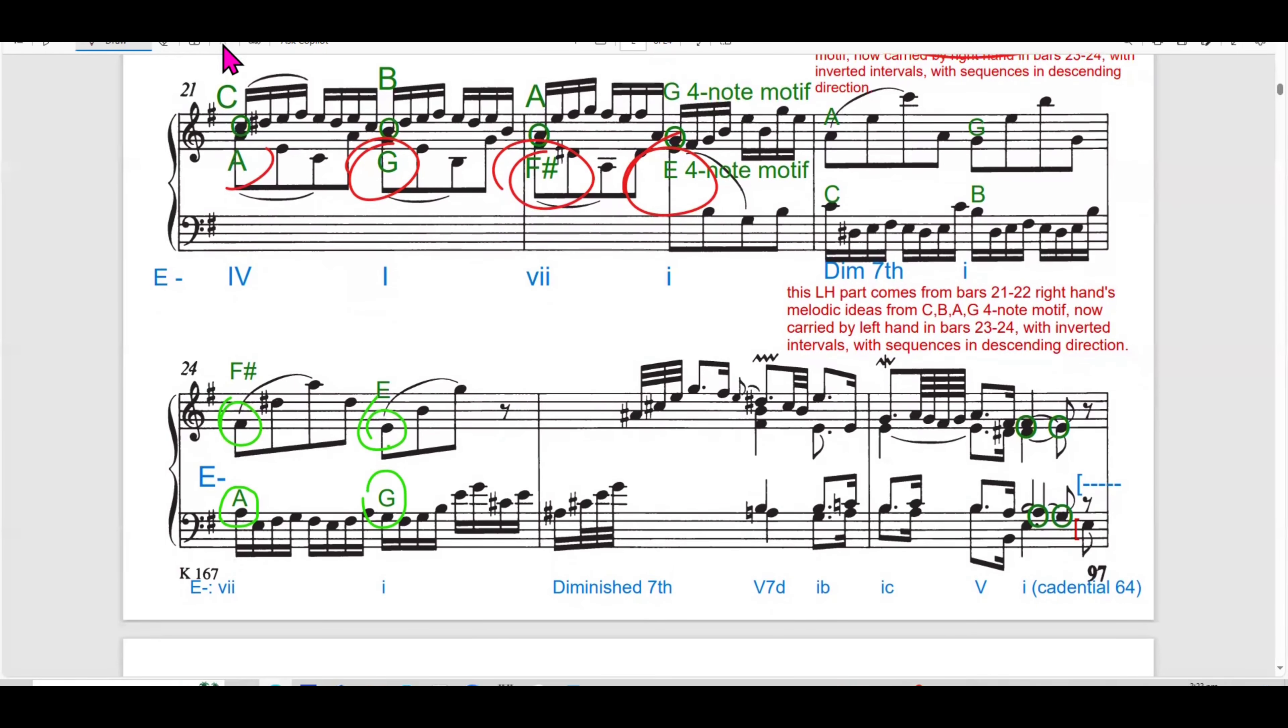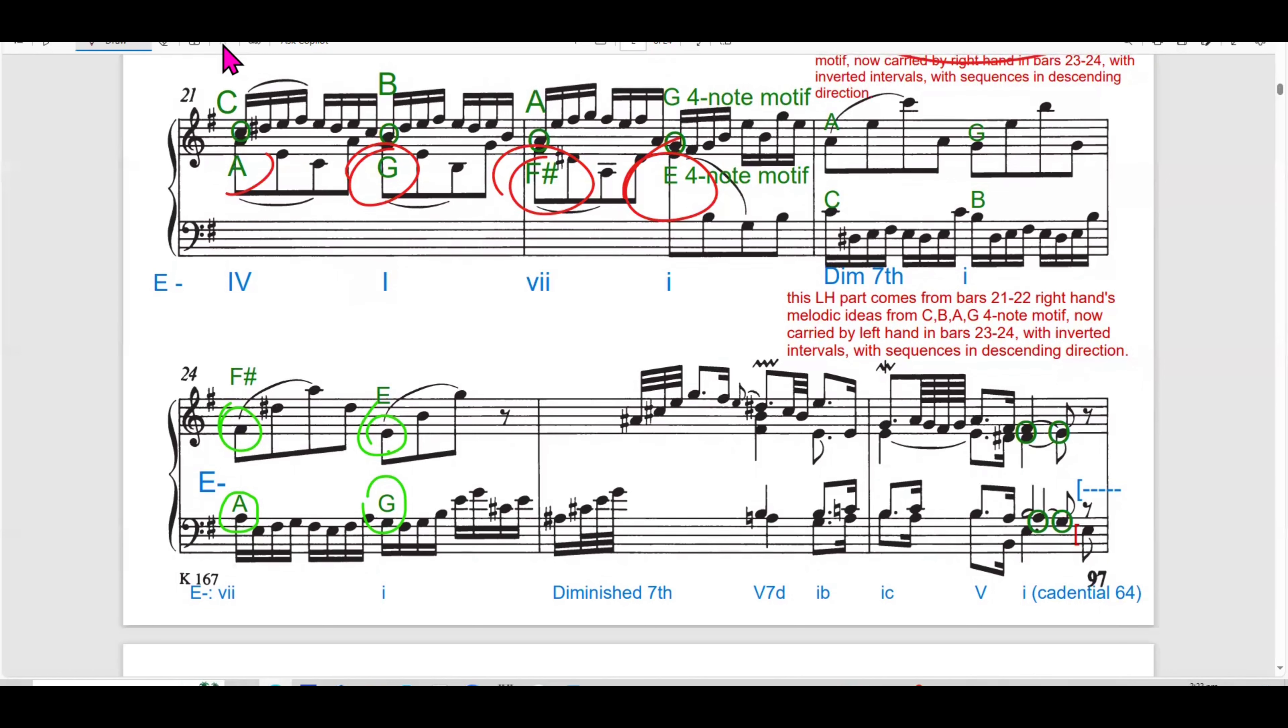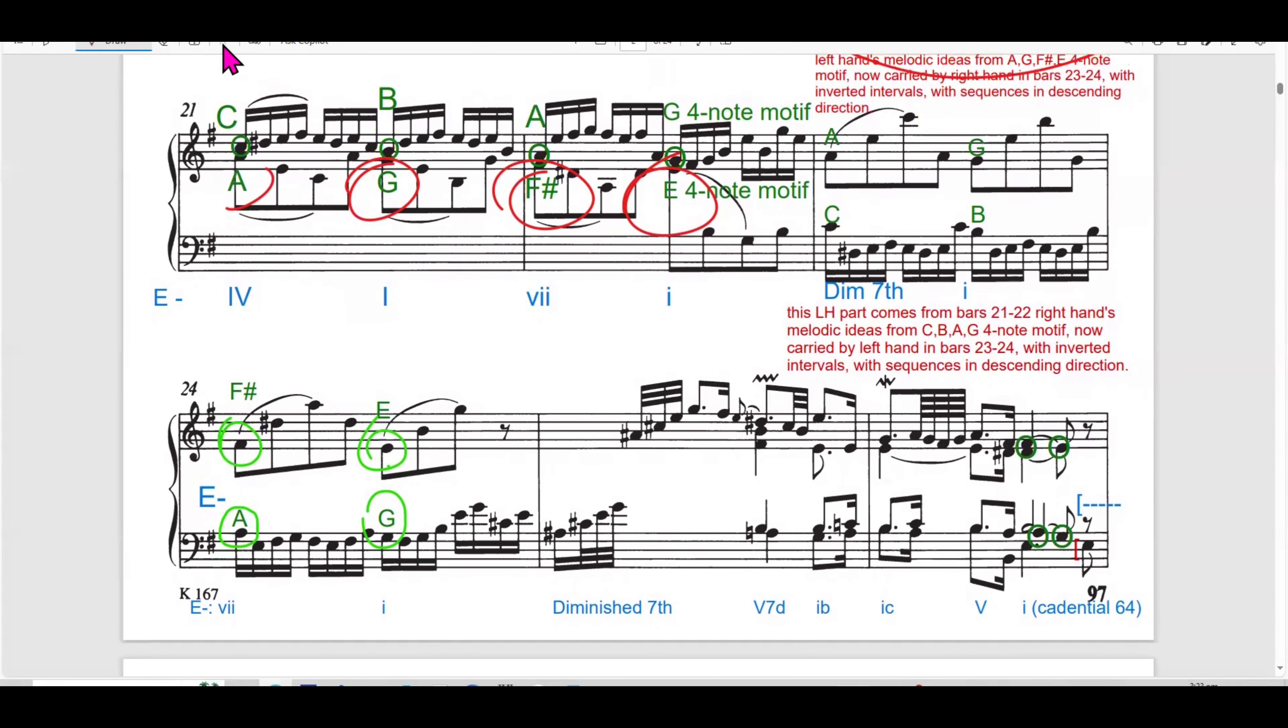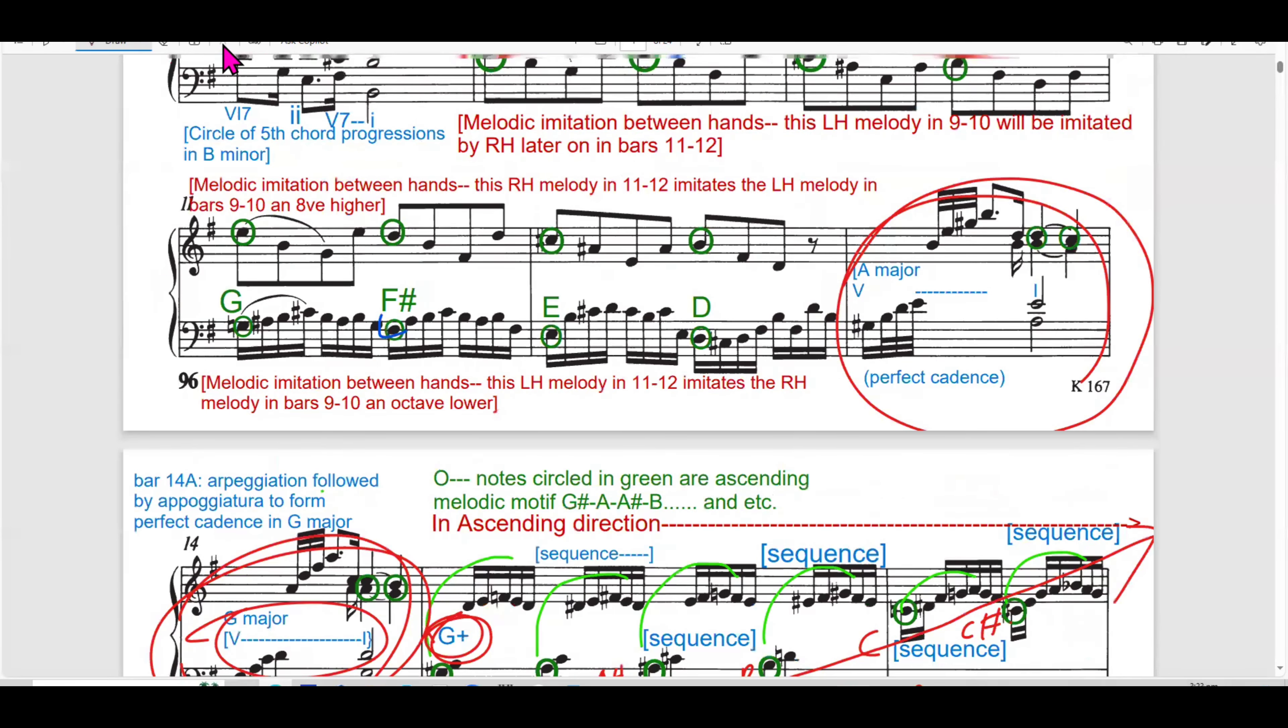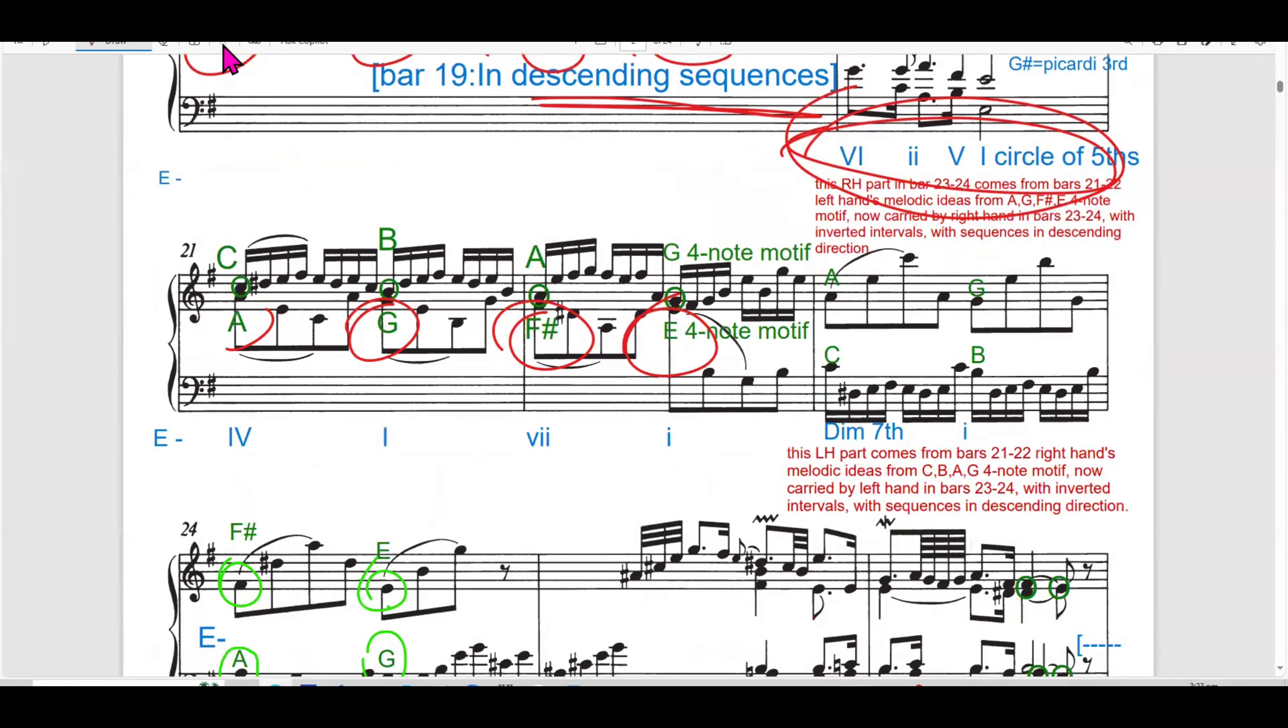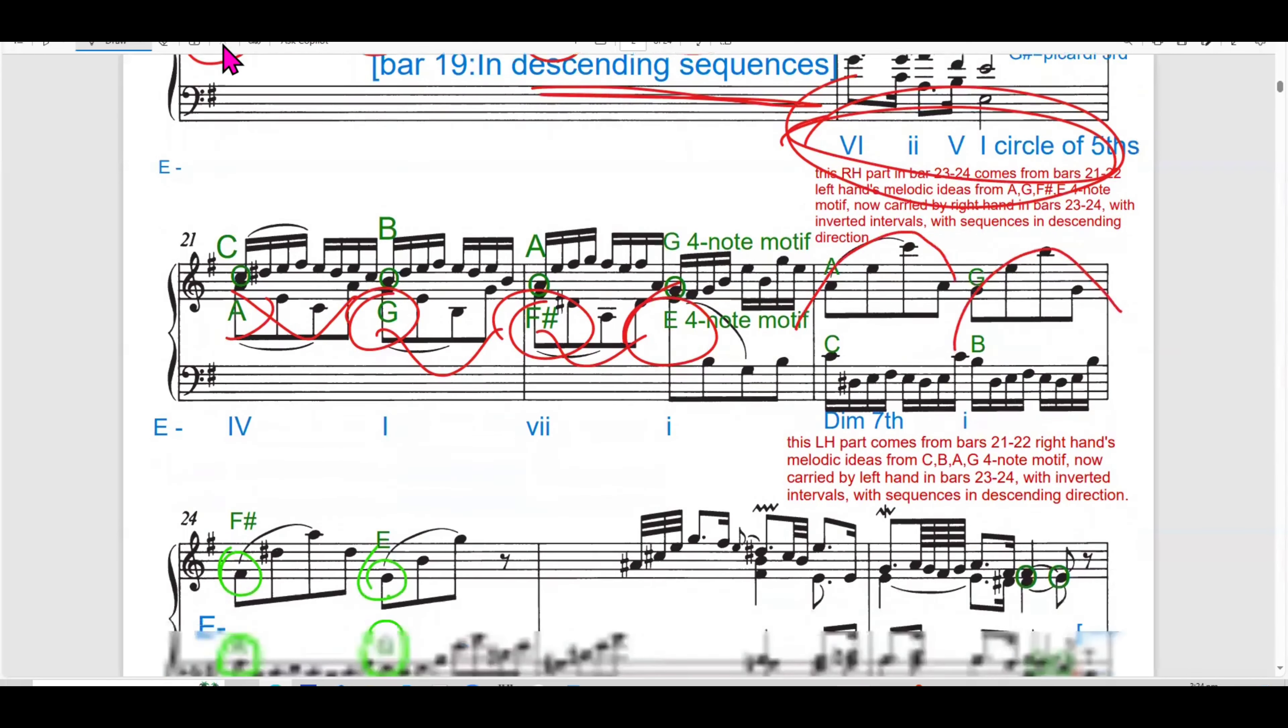Bar 21 to 24 has melodic imitation and descending sequences. In bar 21 to 24, it features melodic ideas that are based on four-note motifs in both hands. The right hand represents a motif of C, B, A, G while the left hand follows with A, G, F-sharp, E, introducing a layer of melodic imitation.